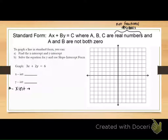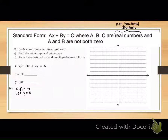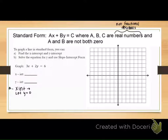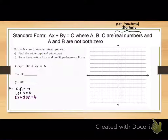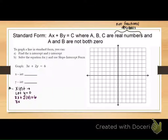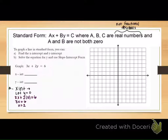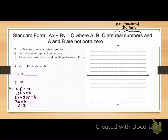To find the x-intercept, what do you know about y? It has to be zero. So to find the x-intercept, you're going to let y equal zero in your original equation. Our original equation is 3x plus 2y equals 6. So we do 3x plus 2 times 0 equals 6. So 3x equals 6, so x equals 2. What ordered pair was just created? 2 comma 0. We're saying when x is 2, y is 0 — so our x-intercept is (2, 0).